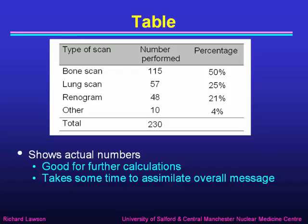Here's an example of data presented as a table. It shows the different types of scan we might do — bone scan, lung scan, renogram — and the number of each that have been performed in a particular period, and the percentage of the total that that represents. The table shows the actual numbers, which are very good if we want to do further calculations, but because there are a lot of data it takes some time to assimilate the overall message at a glance.